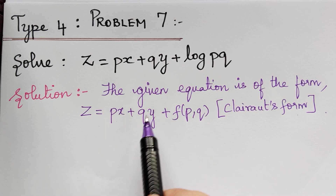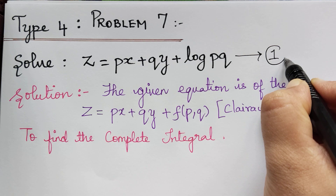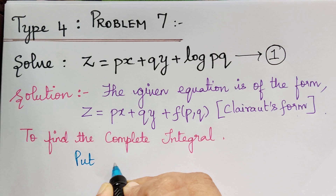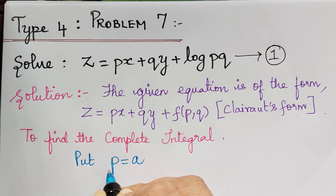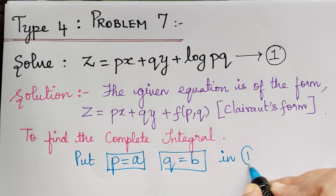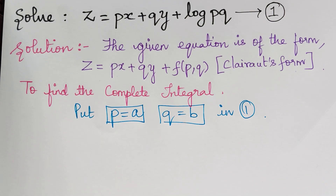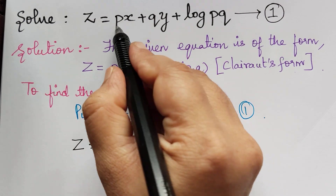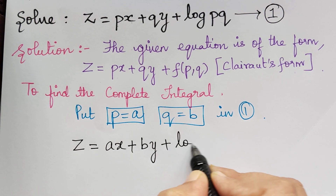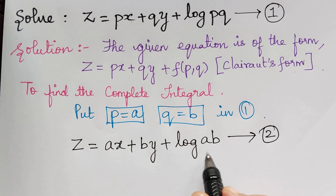For such an equation, we have to first find the complete integral. Let us mark the given equation as Equation 1. In order to find the complete integral, we have to put p = a and q = b in Equation 1. So when we put p as a and q as b in Equation 1, z will become ax + by + log(ab). This is marked as Equation 2 and gives the complete integral.